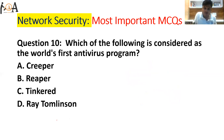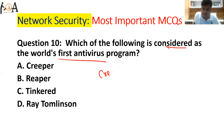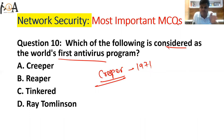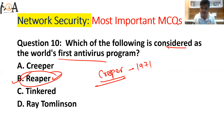Question number ten: which of the following is considered the world's first antivirus program? We already discussed that the first virus was Creeper, invented in 1971 as an experimental program. It could harm your computer, replicate itself, make copies, and transfer from one system to another. To resolve the damage caused by the Creeper virus, a software was developed as its antidote — called Reaper. Reaper was the first antivirus, developed to remove and delete copies of Creeper.